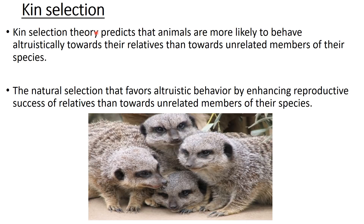Another related concept is kin selection, which predicts that animals are more likely to behave altruistically towards their relatives than towards unrelated members. Natural selection also says to increase your own species — the fittest will survive — and increase happens through reproduction. Altruistic behavior follows the same logic: the closer the relation, the higher the rate of altruism.